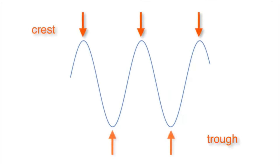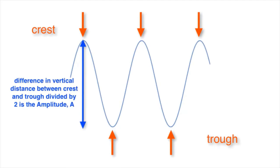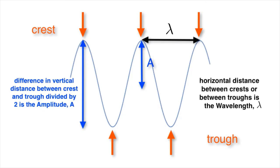This is a crest, a trough. The difference in height between crest and trough divided by two is the amplitude of the wave, denoted by capital A. The wavelength is the distance from crest to crest or between trough to trough, and it's almost always denoted by the Greek letter lambda.